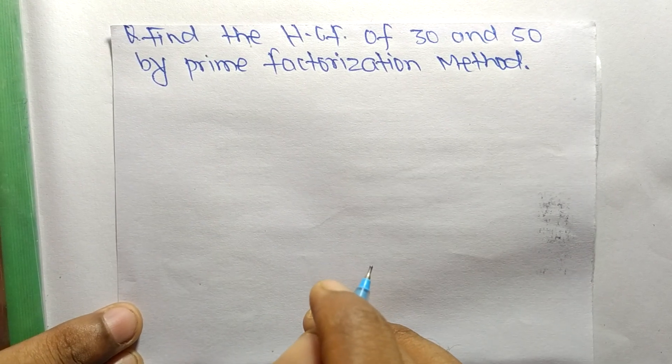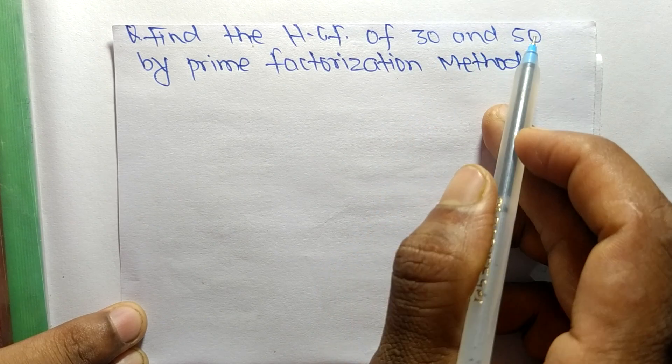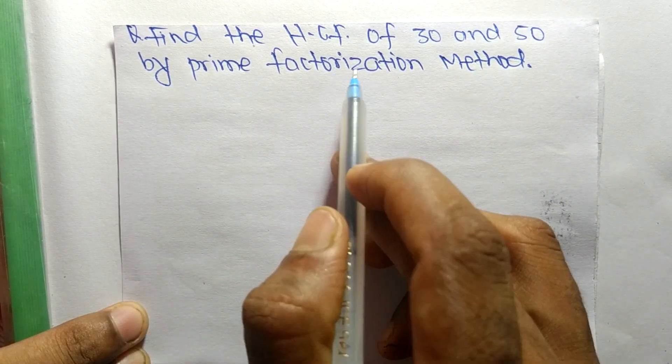So today in this video we shall learn to find the HCF of 30 and 50 by prime factorization method.